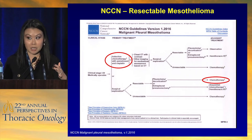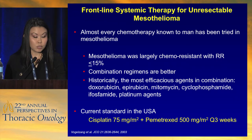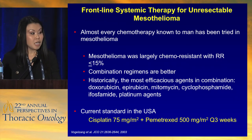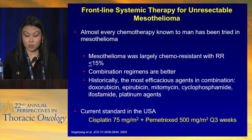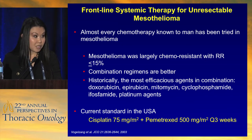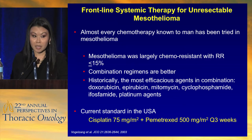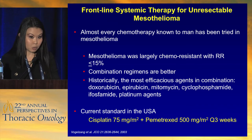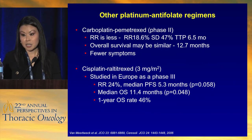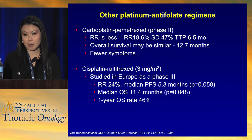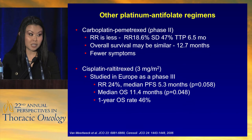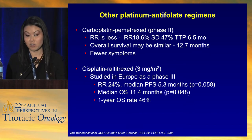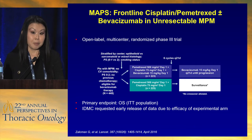We do not give the platinum doublet with anything else right now, but hopefully that may change as the field moves forward. In unresectable disease, almost any chemotherapy has been given to mesothelioma patients and response rates are generally not very high. Combination therapies have historically been better, but essentially the only FDA-approved agents have been platinum plus pemetrexed for unresectable mesothelioma. Carboplatin can be substituted for cisplatin in unresectable disease, which is very reasonable.